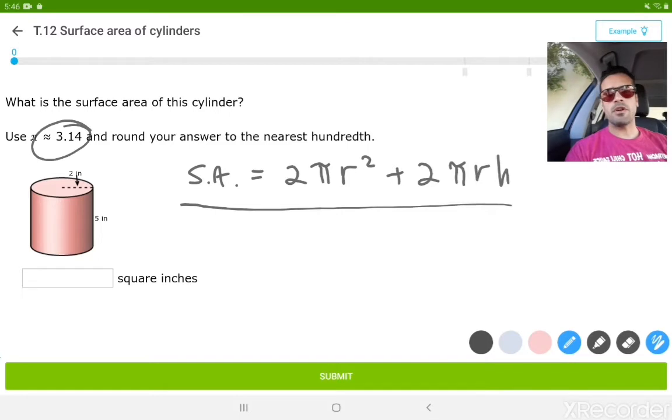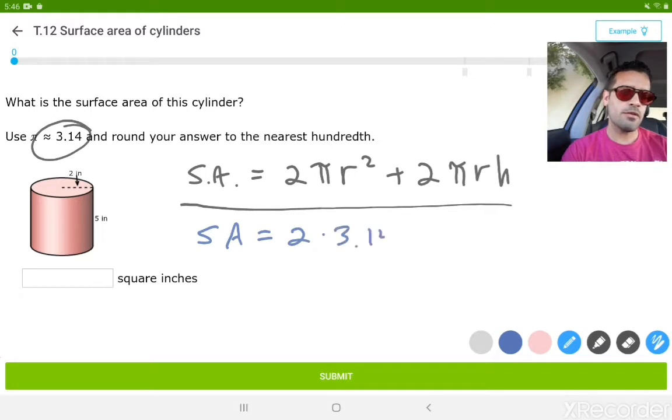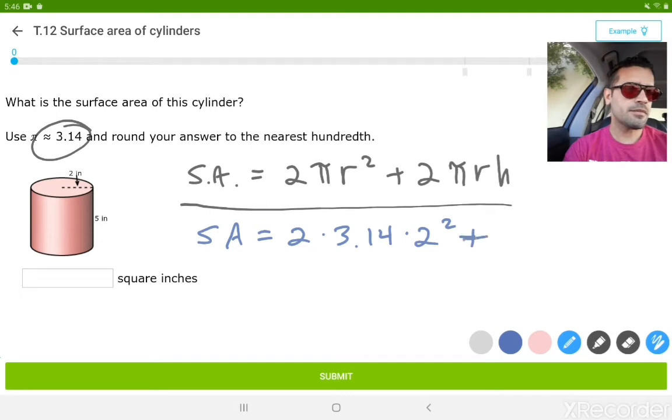We're going to plug in what we know from the problem into the formula. Surface area equals 2 times 3.14 times radius, which is 2 squared. And 2 squared just means 2 times 2, plus 2 times 3.14 times radius, which is 2, times our height, which is 5.